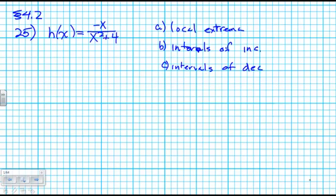This is problem number 25 from section 4.2. The key to finding all of these items—the local extrema, the intervals of increasing and decreasing—is to start with the derivative, because the derivative can tell us where it's increasing and decreasing, and we look at the zeros to determine the local extrema. So let's start by taking the derivative of h.